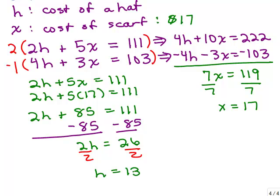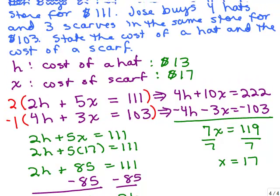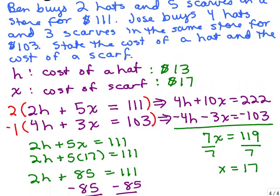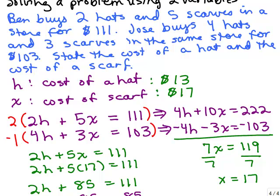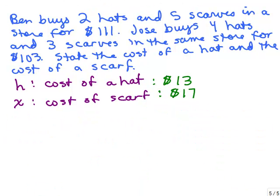So the cost of a hat must be $13 if we did this right. And that's what we're looking for, the cost of one hat and the cost of a scarf. Now you would have gotten the same answer if you had plugged in 17 into the second equation, the 4H plus 3X equals 103. Now I want to make sure these answers make sense given the original problem. So here's the original problem, here's what we got for the cost of a hat and the cost of a scarf.